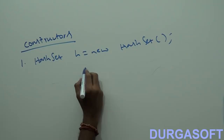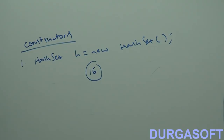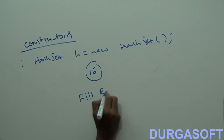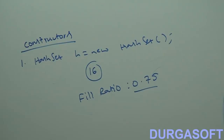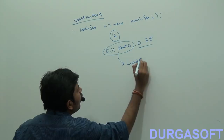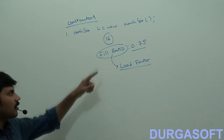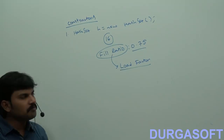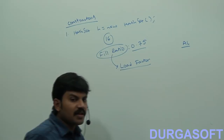The first constructor: HashSet h = new HashSet(). This creates an empty HashSet object with a default initial capacity of 16 and a default fill ratio of 0.75.